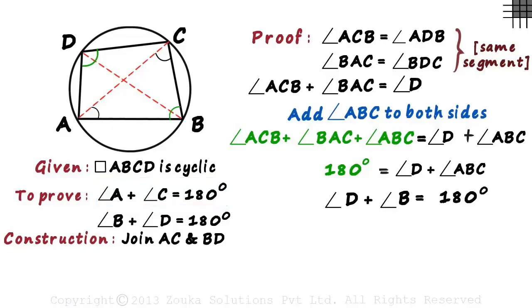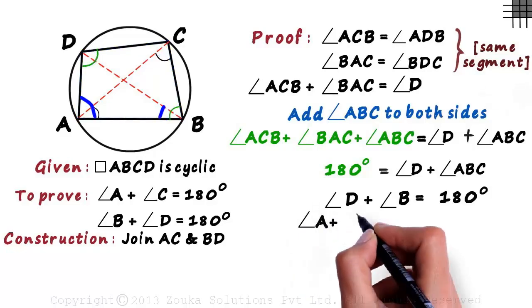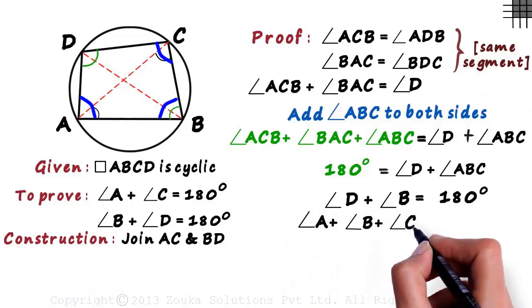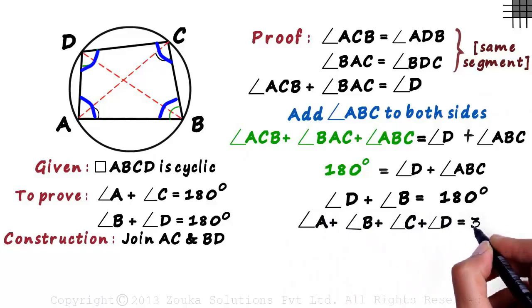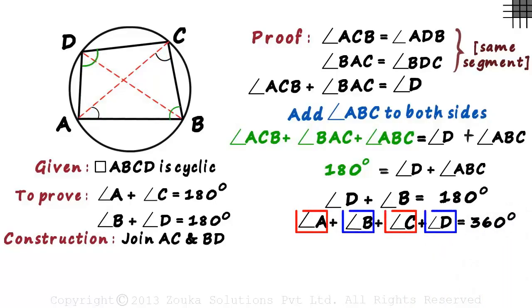We know that the sum of all angles of a quadrilateral is 360 degrees. Angle A plus angle B plus angle C plus angle D equals 360 degrees. And out of these four, we know that B and D add up to 180 degrees.